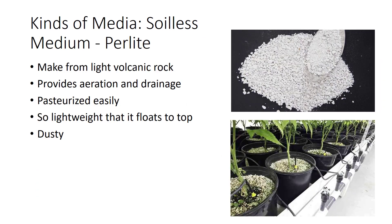Perlite is made from light rock that is volcanic in origin. Its advantages include the capacity to provide aeration and drainage, and it can be pasteurized easily. Perlite's low weight can cause it to float to the surface of the medium when watered, and it also produces dust when mixed with other components. However, this can be overcome easily by slightly wetting the material prior to mixing.